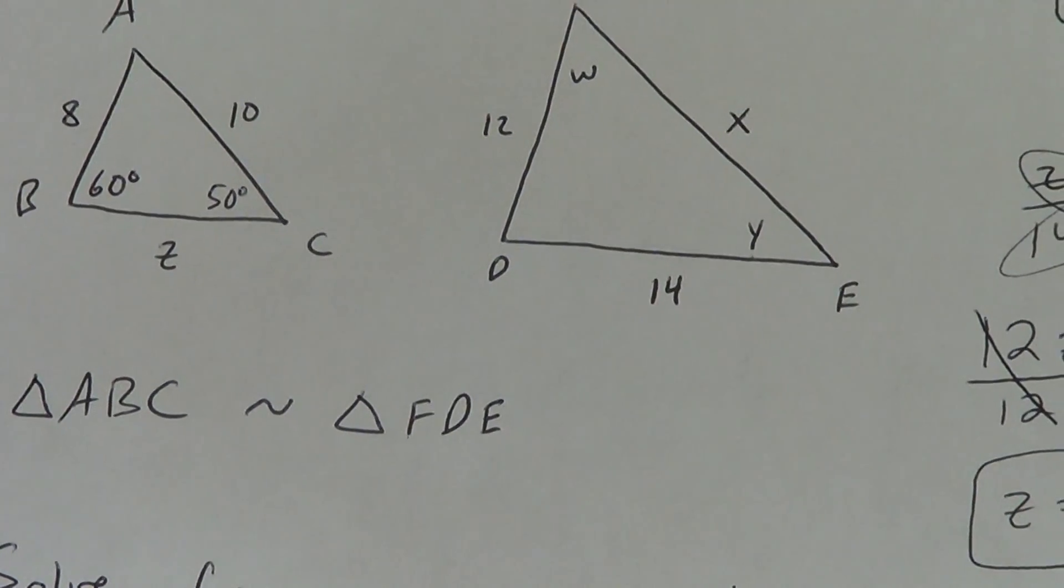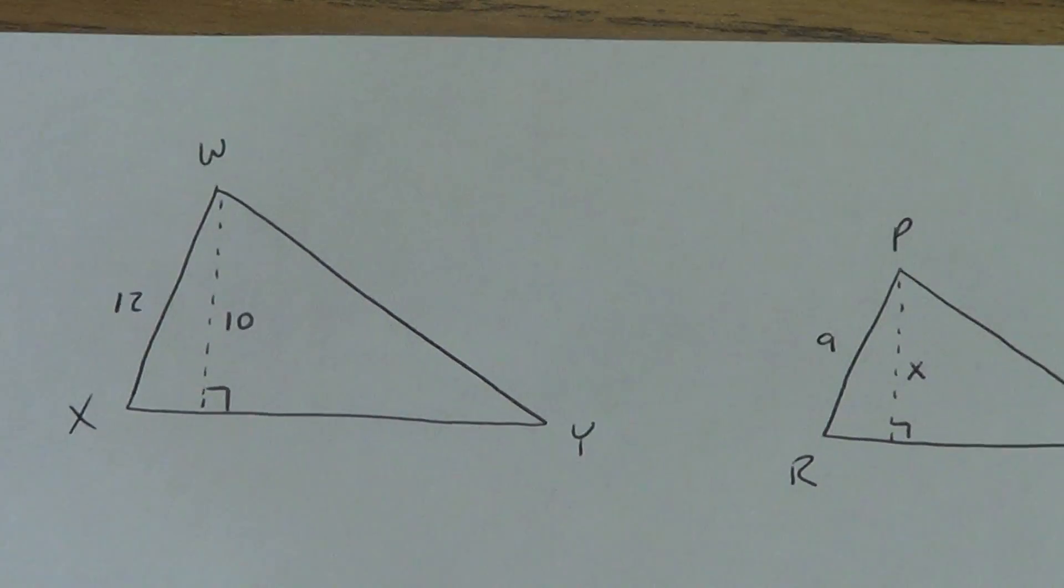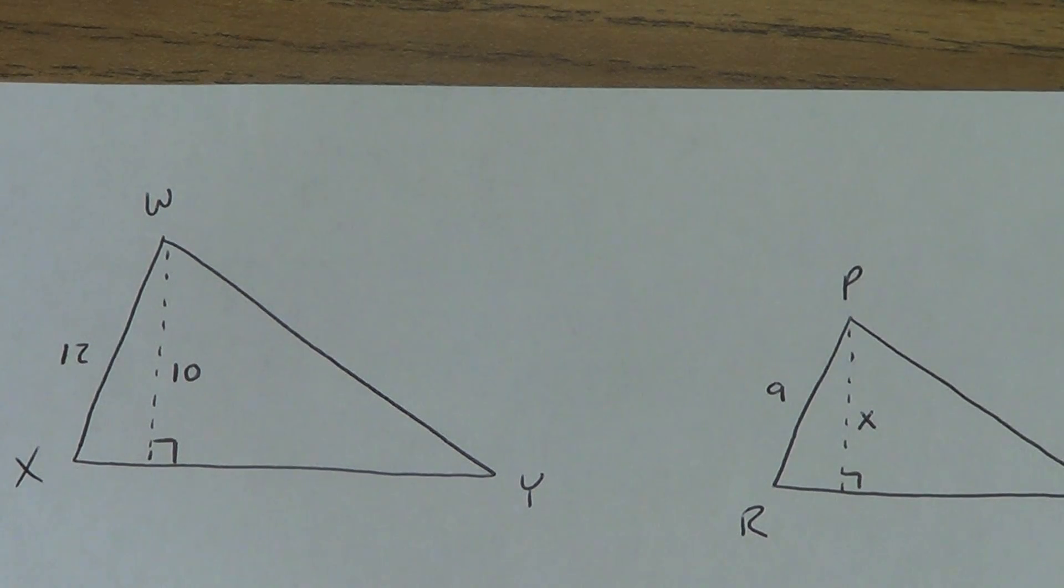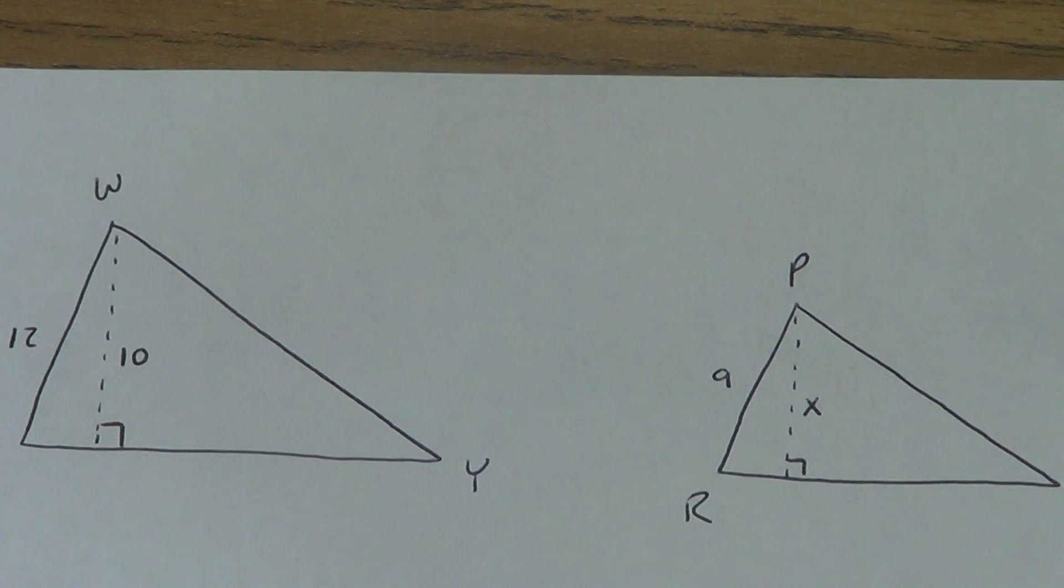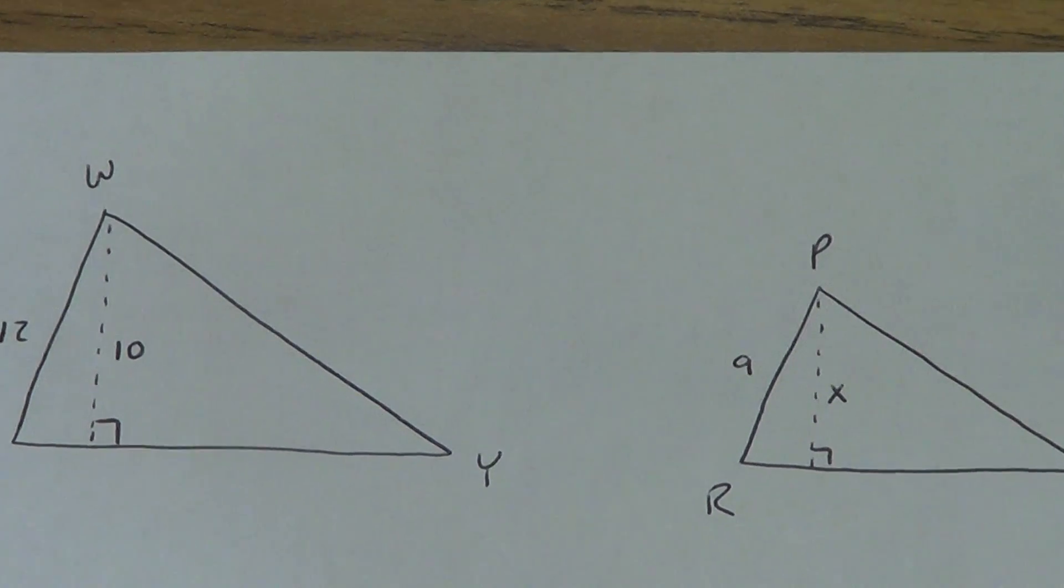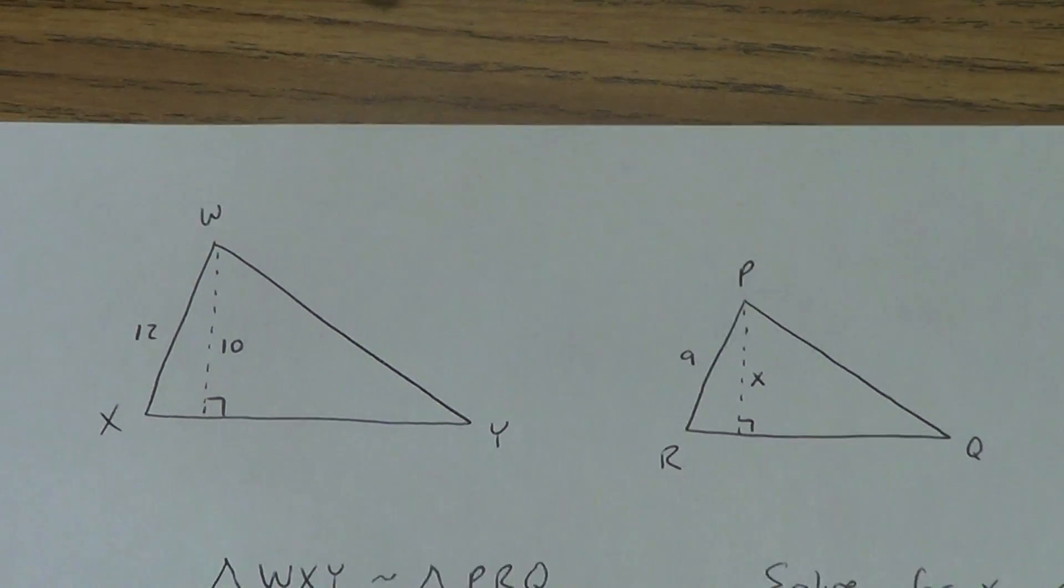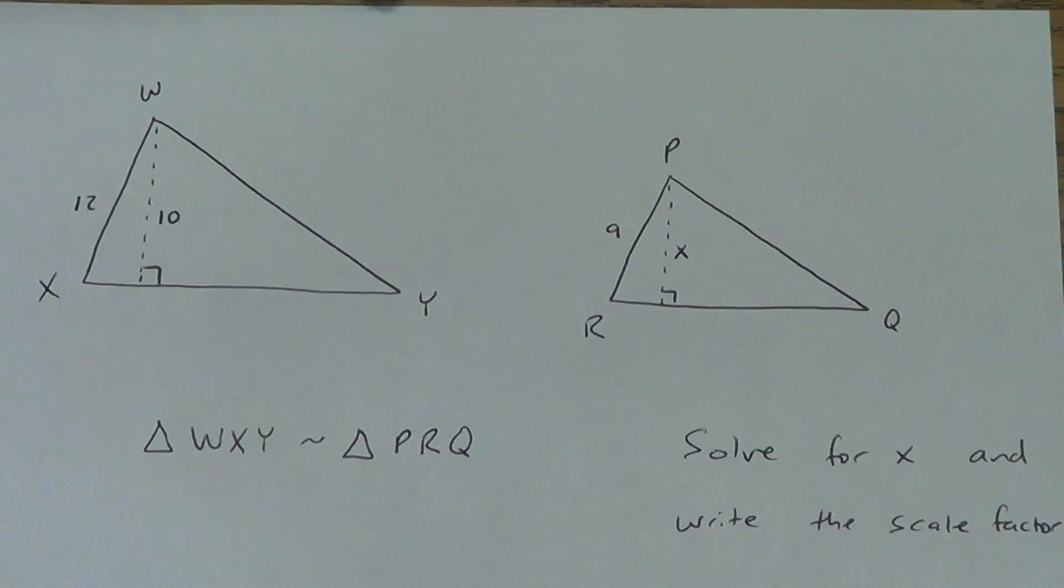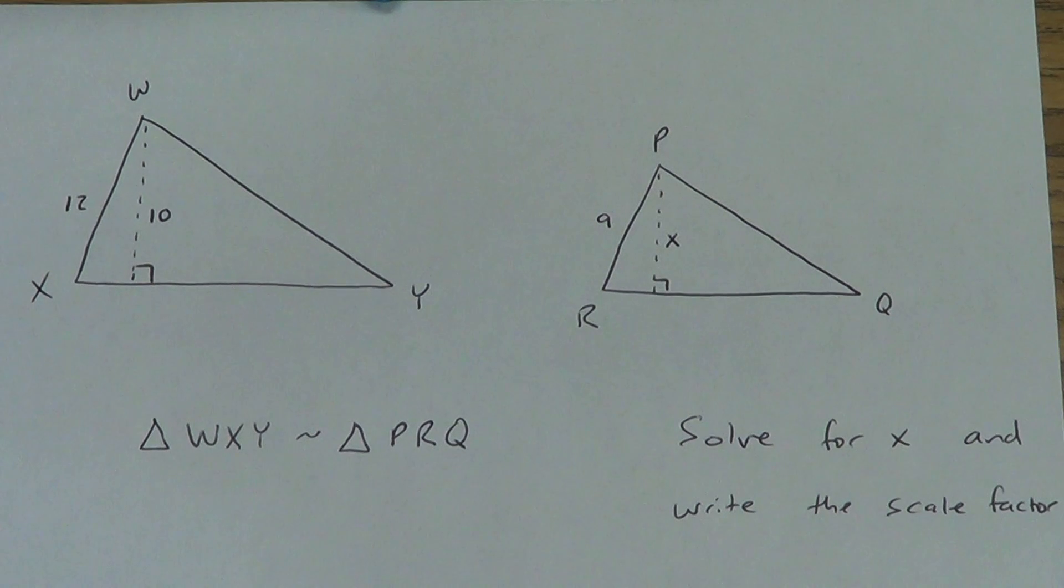Let's do this one. Go ahead and copy this picture down real quick. We've got a triangle WXY with a 12 and a 10. And we've got triangle PRQ. We're going to solve for X and we're going to write the scale factor. Now, you might say, but X isn't a side of the triangle. That's okay. Here's the nice thing about this. Any special segment like altitudes and medians and angle bisectors and all that stuff still works the same way. Still proportional. So, I want you to go ahead and try this one.